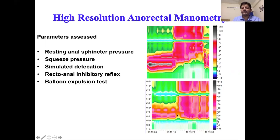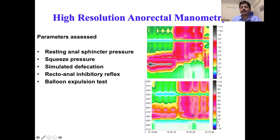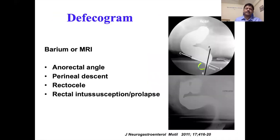In dyssynergic defecation, the rectum contracts during defecation but the sphincter does not relax — the pressure color remains the same, indicating persistently high sphincter pressure. This pattern on manometry confirms the dyssynergia. The other test for dyssynergic defecation is defecography, which can be barium-based or MRI-based. MRI is getting more popular because it provides structural information about the pelvic floor that barium does not.